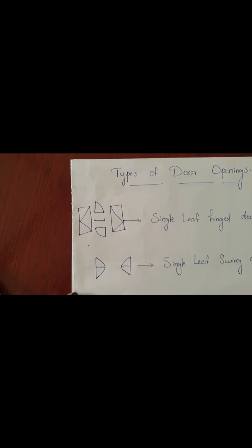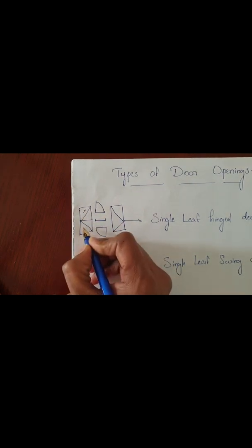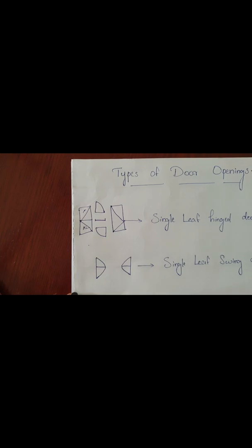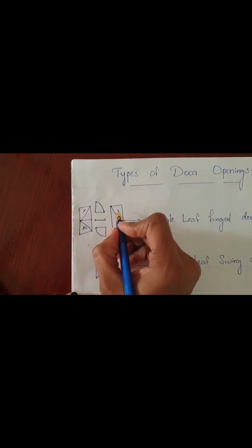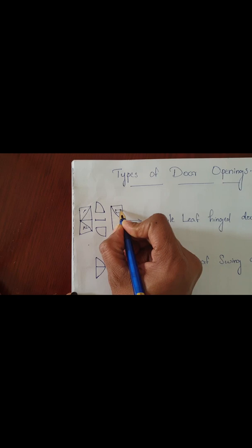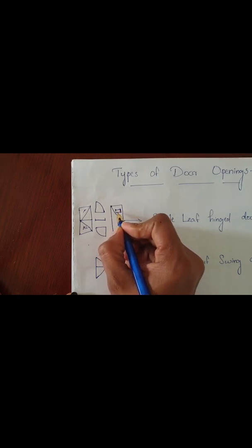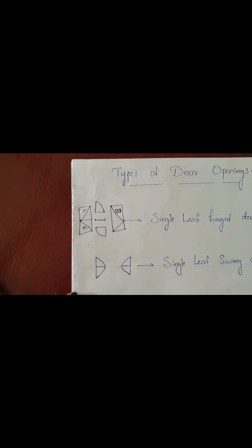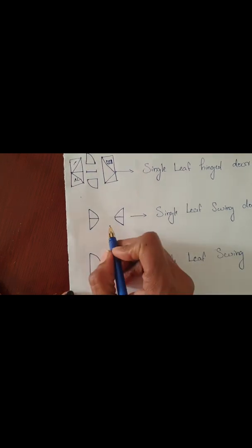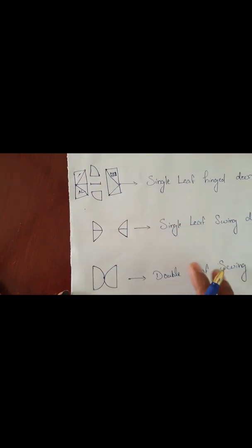If a sandwich panel is coming, it is an aluminum door. In some doors, half portion will be glazed and half portion will be aluminum. Also, one small glass portion — a vision panel — is provided in aluminum doors, or in wooden doors as well. You can see this in your buildings — one small glass piece is given, that's the vision panel.